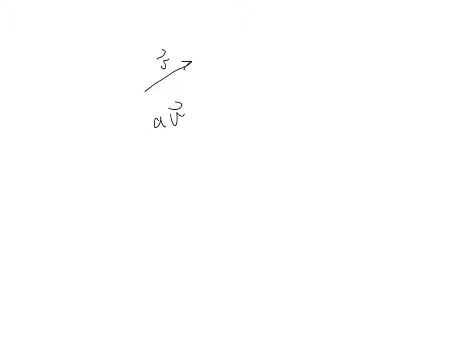What will happen to vector V? What is the resulting vector? In general, when you multiply a vector by any real number, if the real number A is greater than 0, then the new vector, let's call it R, is going to be the same vector V with the magnitude multiplied by A. So it's going to be A times the magnitude of V, and it's going to have the same direction as V.